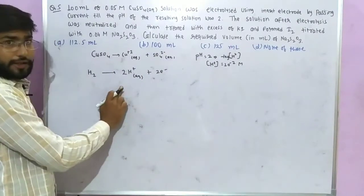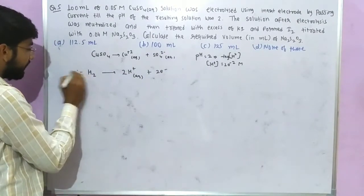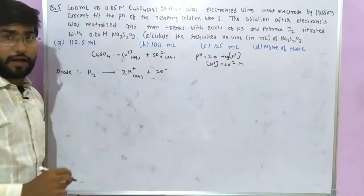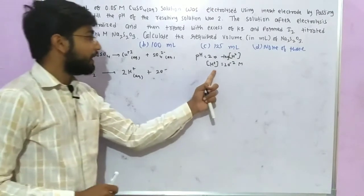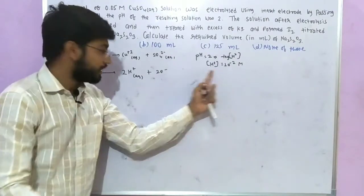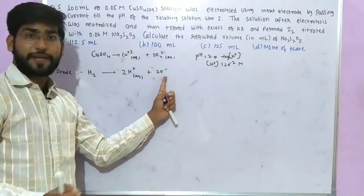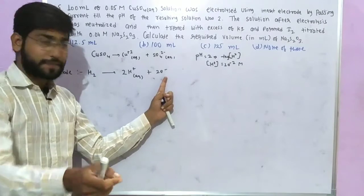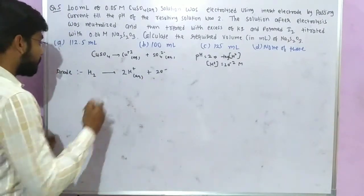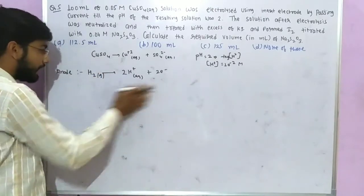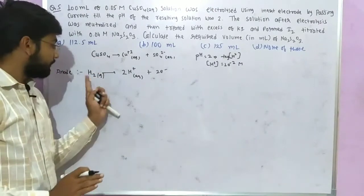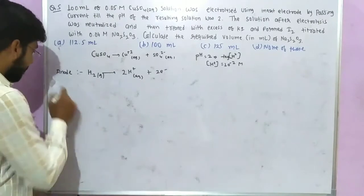At the anode, water undergoes oxidation, producing hydrogen gas and H⁺ ions. The solution becomes acidic as H⁺ is produced. Hydrogen gas oxidation occurs at the electrode during electrolysis. The overall electrolysis reactions proceed at both anode and cathode simultaneously.